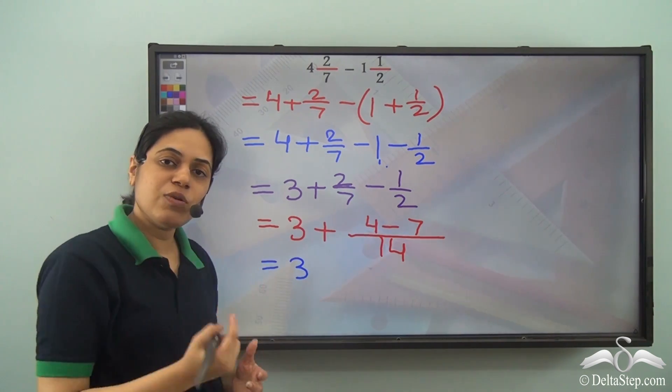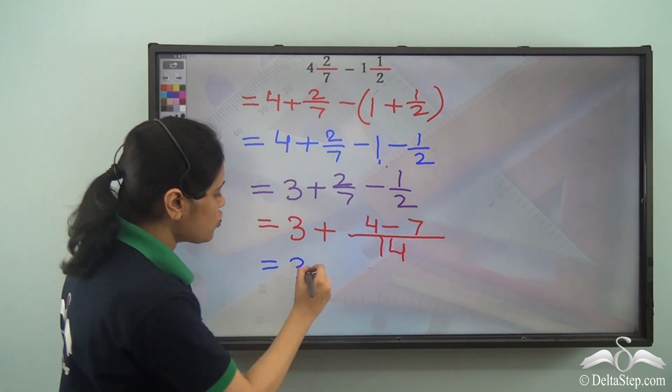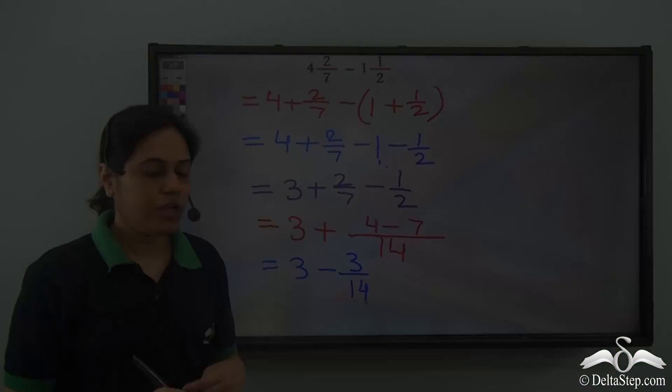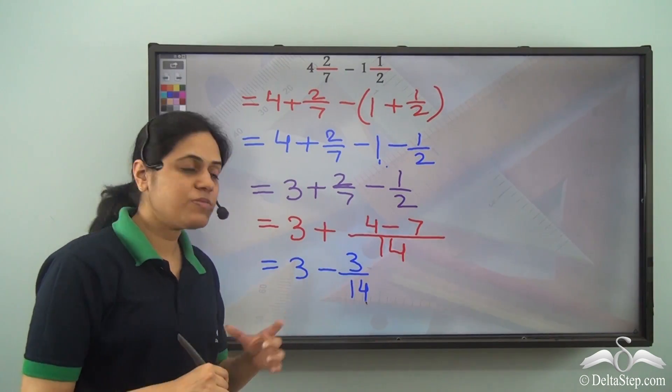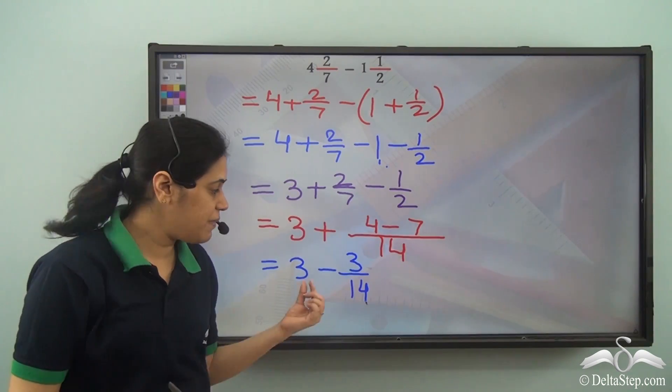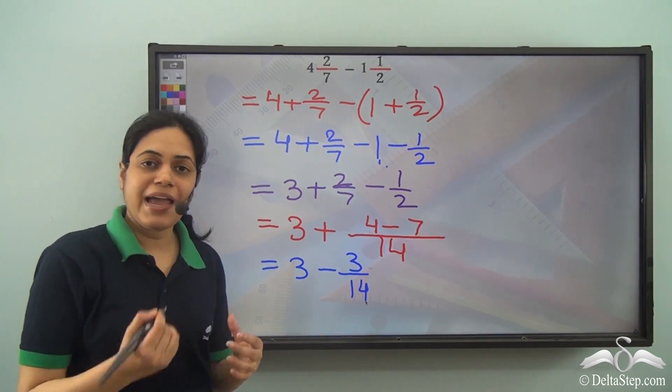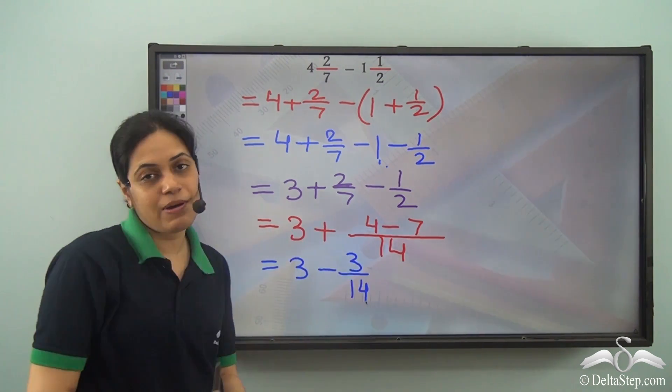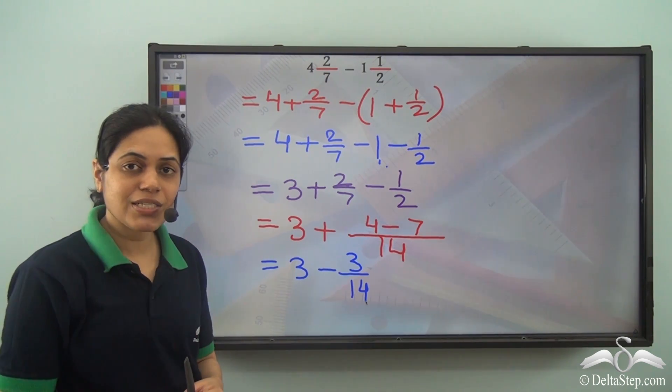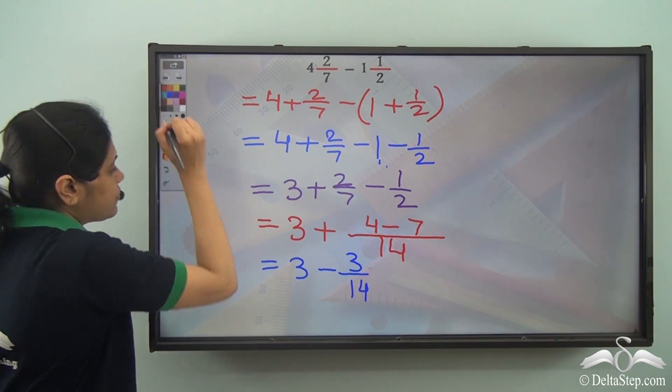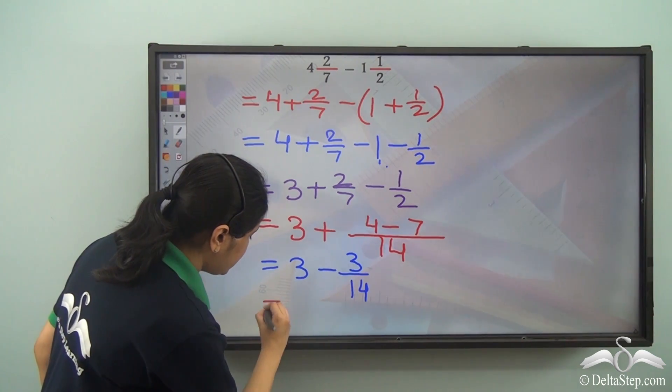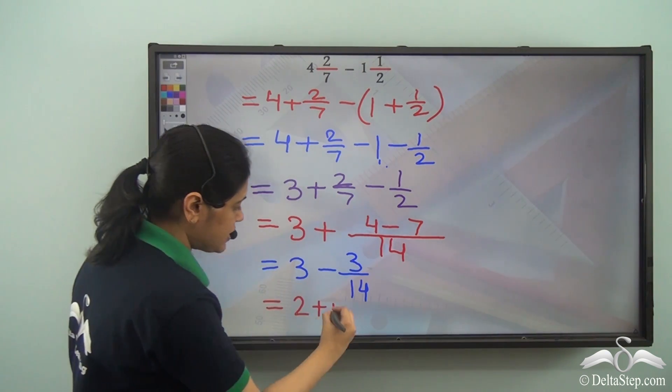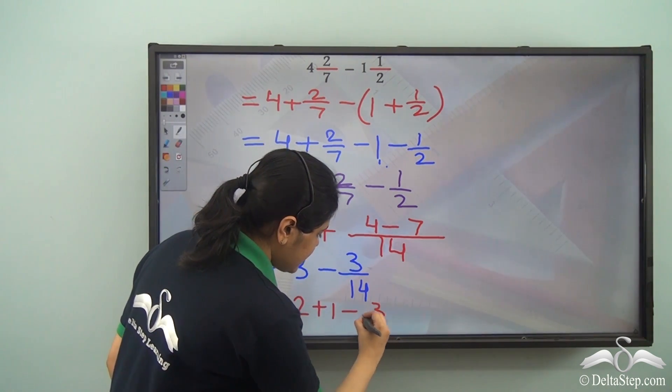Now this will give me minus 3 by 14. Plus minus is equal to minus, so I will have minus 3 by 14. Now how can I write this in terms of mixed fraction? If I have 3 plus 3 by 14 I can write it as 3 3 by 14, but over here it is 3 minus 3 by 14. So how can I write it as mixed fraction? So 3 can be written as 2 plus 1. So I have 2 plus 1 minus 3 by 14.